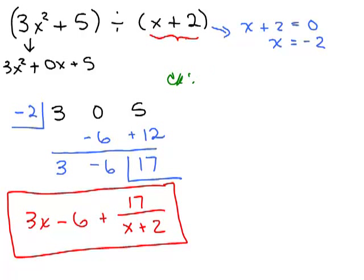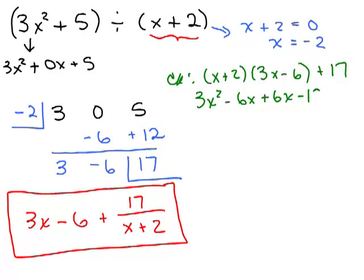Let's check. We take the x plus 2 times the 3x minus 6, take whatever you were dividing by, by your new quotient which is the 3x minus 6, times x plus 2. And we're going to add the remainder which was 17. And we want to see if that'll give us this 3x squared plus 5. So I'm going to do the FOIL method, 3x squared minus 6x plus 6x minus 12 plus 17 which is 3x squared plus 5. It all checks out. So that's the correct answer.